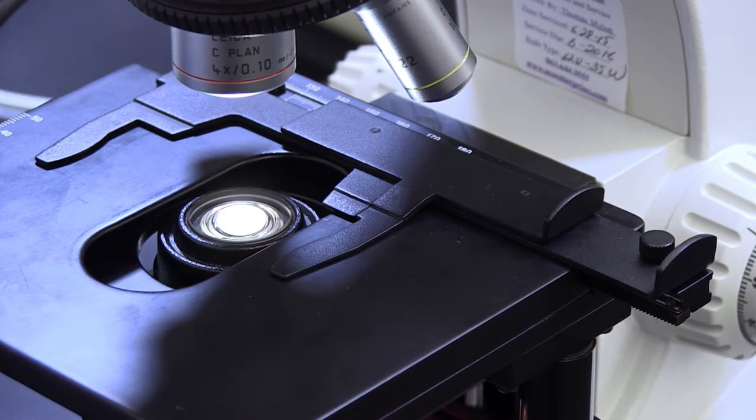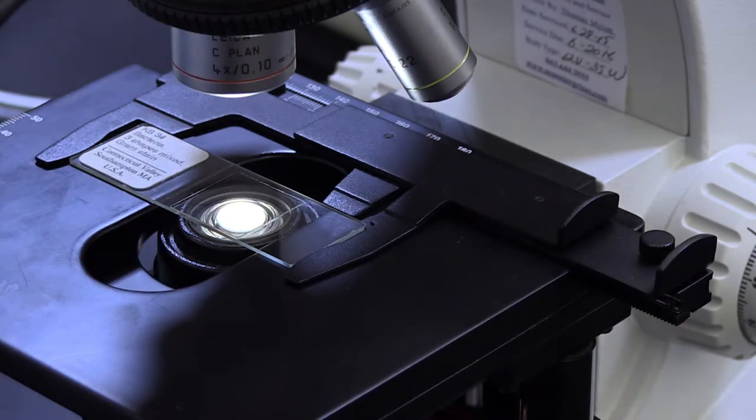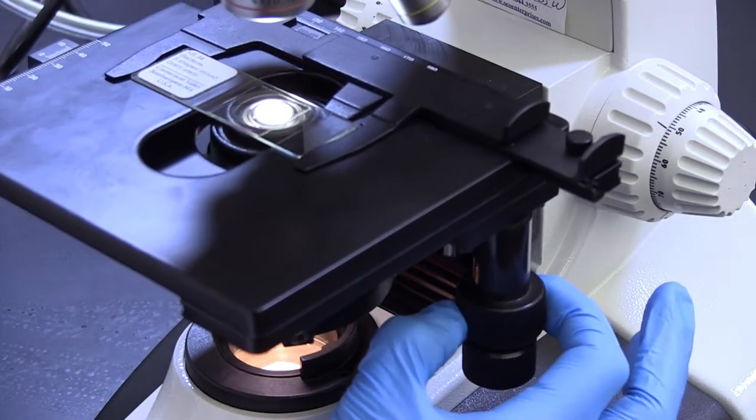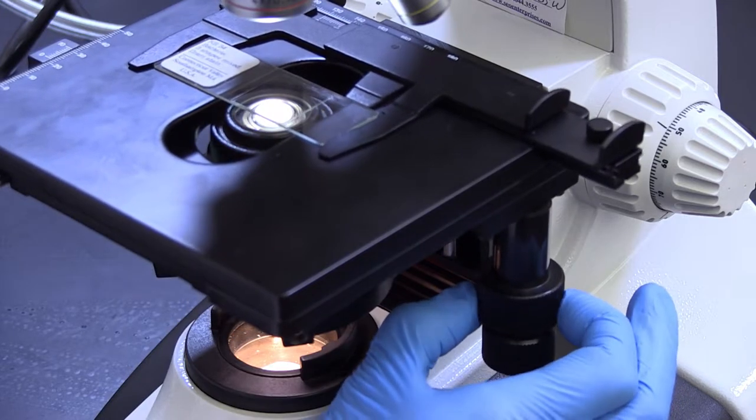The platform that supports the slide is known as the stage. Most microscopes have a clamping device known as the mechanical stage which allows the slide to be held and moved with more precision.